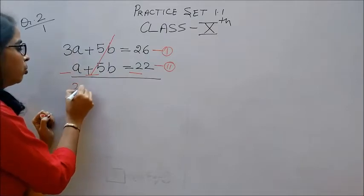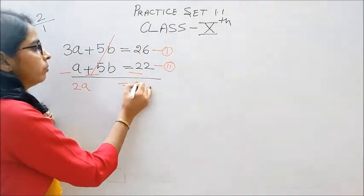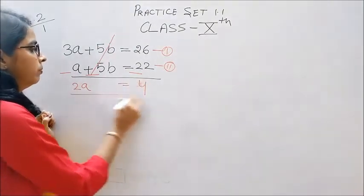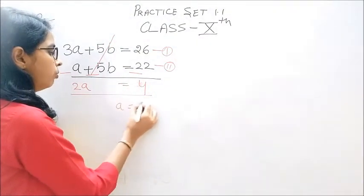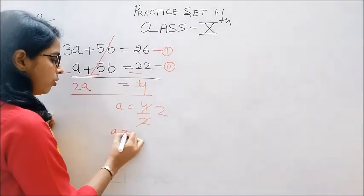3a minus 1a, 2a is equal to 26 minus 22, 4. a is equal to 4 divided by 2, 2 twos are 4, a is equal to 2.